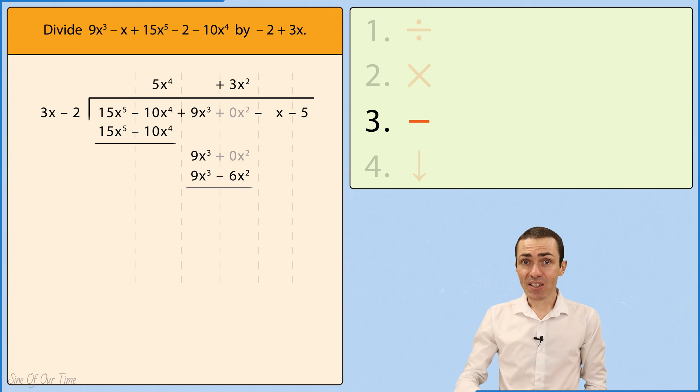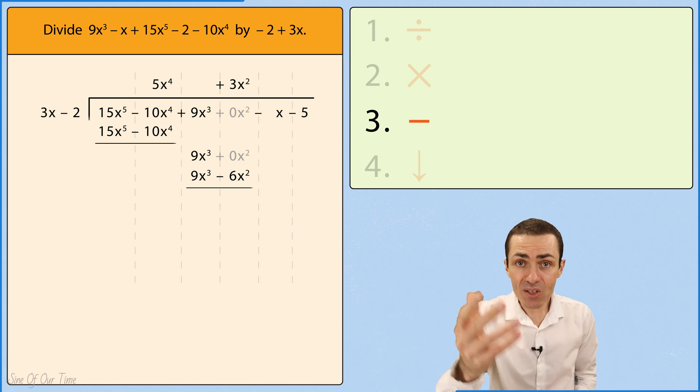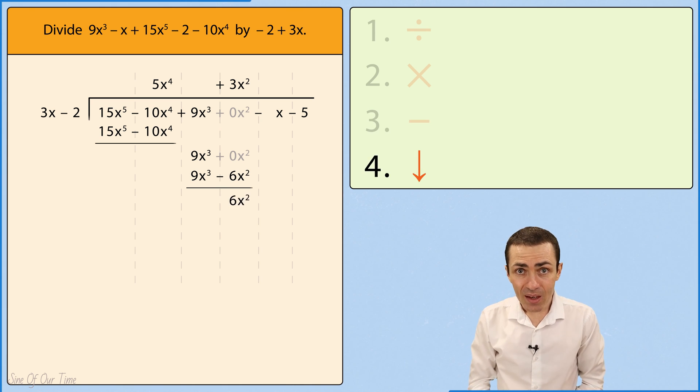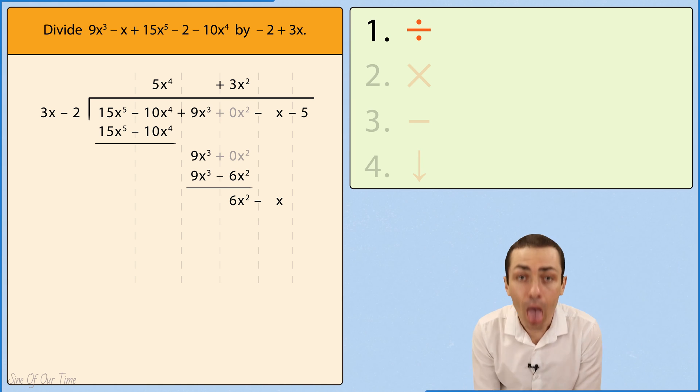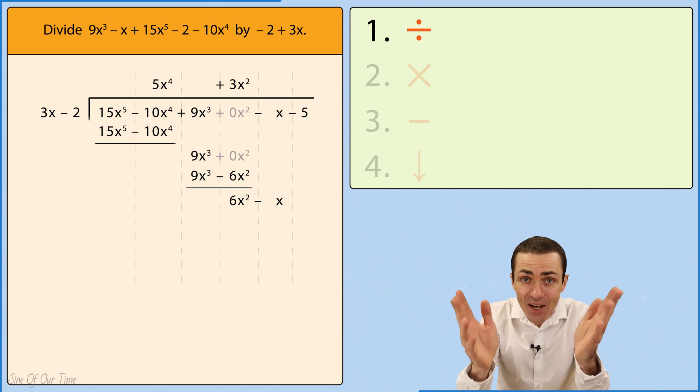And when we do that, we can take 0x squared and subtract negative 6x squared in order to give us positive 6x squared. And at this stage, we are ready to bring down the negative x and write it alongside the 6x squared. And here we go again.